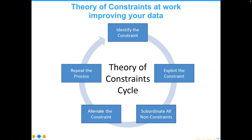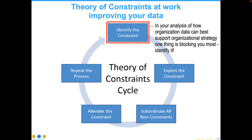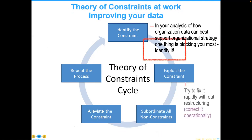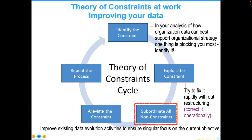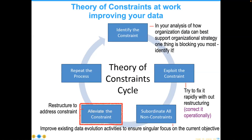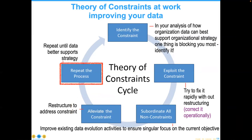In each cycle: we identify a constraint; we exploit the constraint quickly and easily; if that doesn't work, we restructure to bring all power to bear on the constraint; focus it; repeat until it's complete; then go back and start over. In data terms, the questions are: how can your organization best support organizational strategy using data? What is the one thing or top three things blocking you the most? What can we do to correct it operationally, and rapidly restructure and fix it? If we can't, we subordinate all non-constraints — other projects slow down so we can address that particular constraint. If this looks like Plan-Do-Check-Act, the Deming Cycle — it's the same thing.